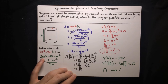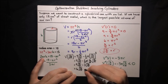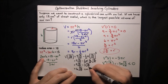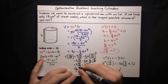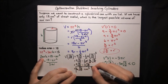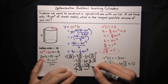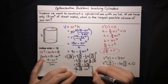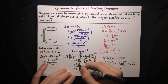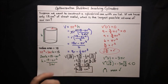Let's put units on that. Units of volume are units of length cubed, and length is in centimeters, so the answer is 6 times the square root of 6 over pi cubic centimeters. That is the largest possible volume of our can that is limited to 18 square centimeters of sheet metal.